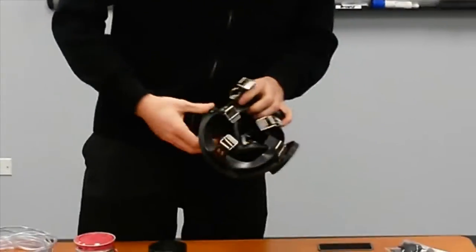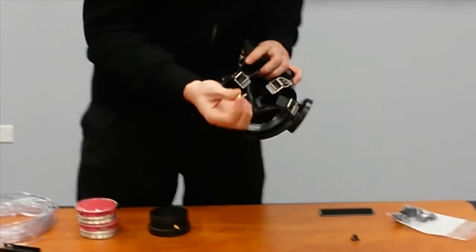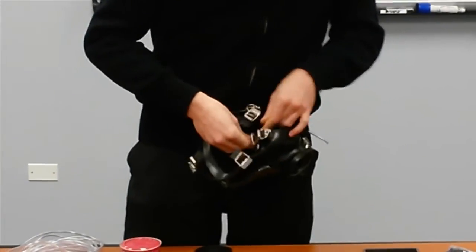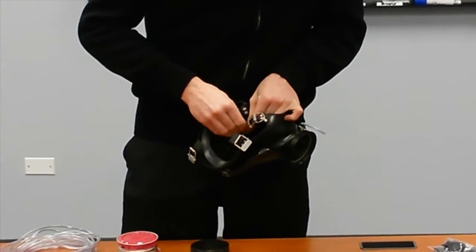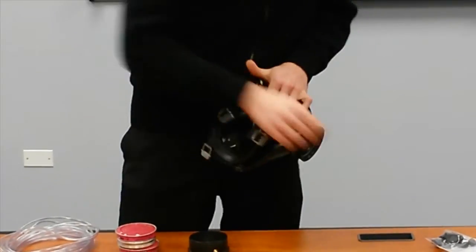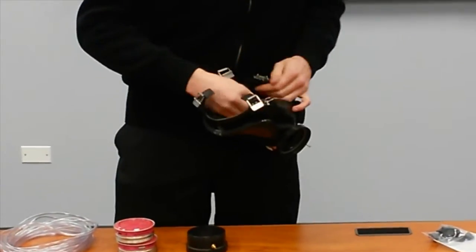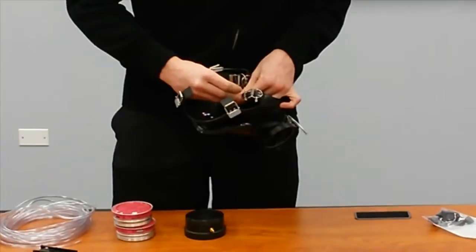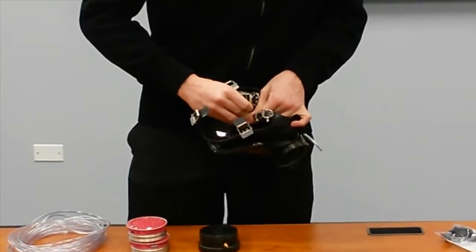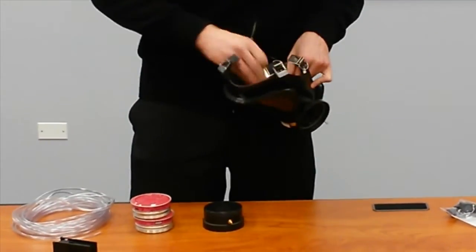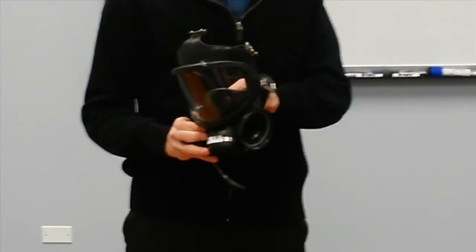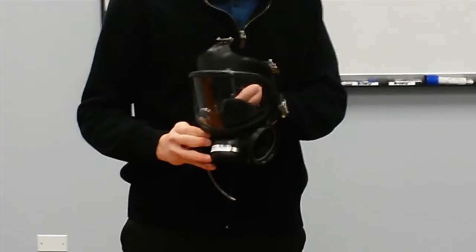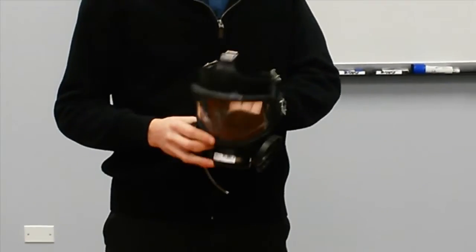Once you have that inside, you're going to take one of these clips and shove that into the end of the tubing. Once that's on the tubing, you'll take a suction cup and attach that to the clip and suction the whole thing to the inside of the mask right between the nose and the upper lip.